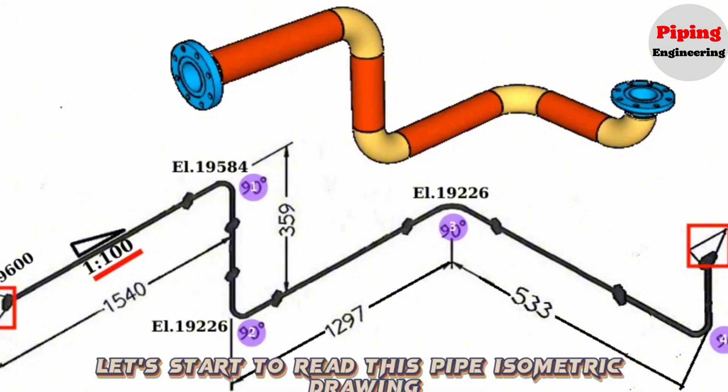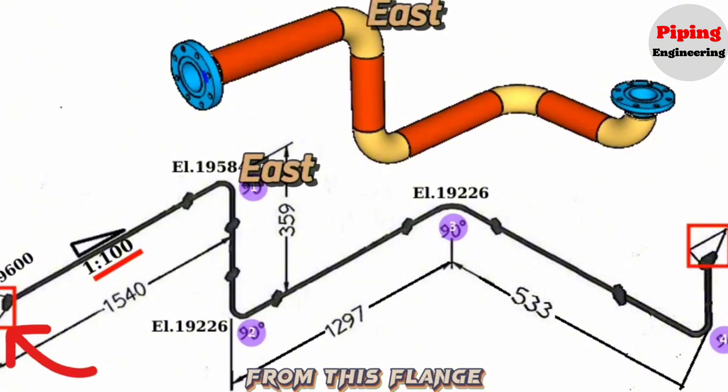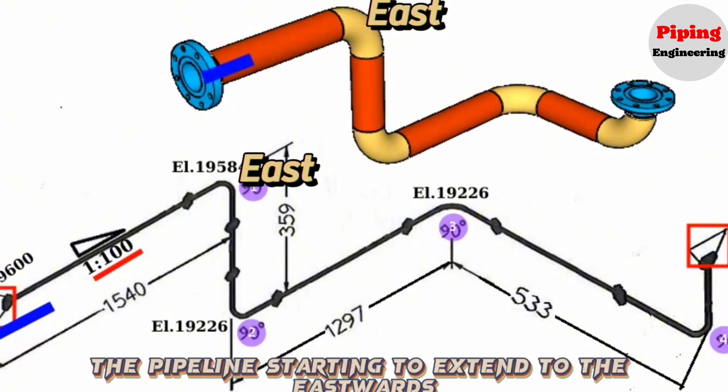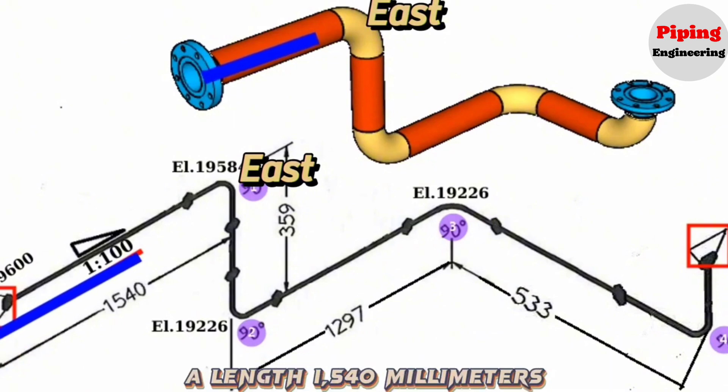Let's start to read this pipe isometric drawing from this flange. The pipeline starts extending eastwards for a length of 1,540 millimeters.